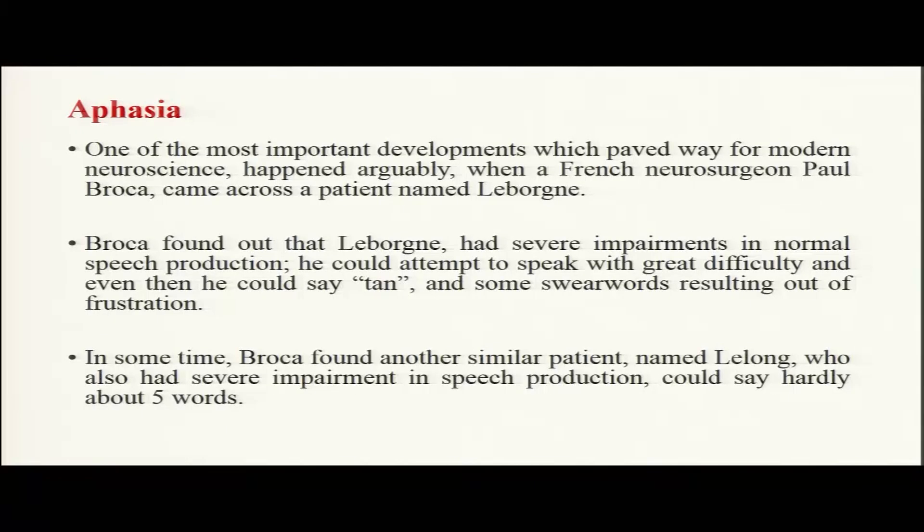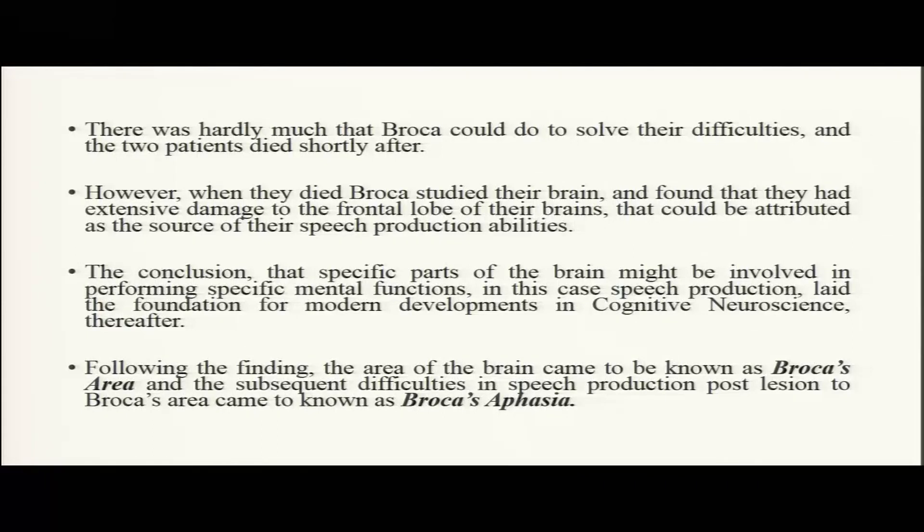Paul Broca also came across another patient called Le Long, who also had severe impairments in speech production and could say a maximum of around five words. Both patients died shortly after. Once they died, Broca studied their brains and found that both had extensive damage to the frontal lobes — mostly in the left hemisphere. That damage was attributed as the source of their language and speech production difficulties. The conclusion was that specific parts of the brain might be involved in performing specific mental functions — the beginning of the localization era.